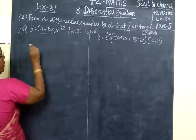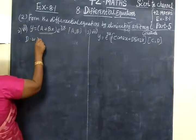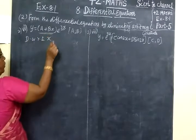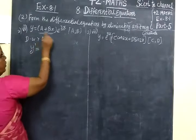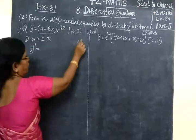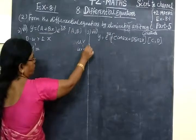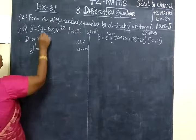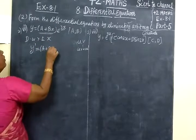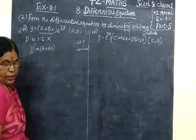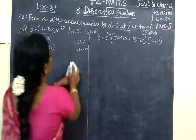Two arbitrary constants means we differentiate with respect to x two times. So first, y dash equals — which is the UV method. UV method: everything is first function into differentiation of second function, plus second function into differentiation of first.